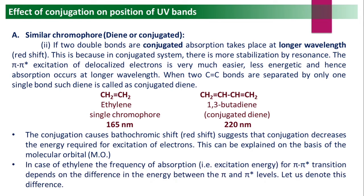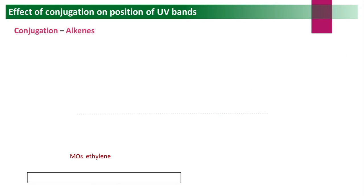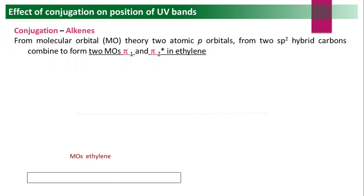In ethylene, the excitation energy for π→π* transitions depends on the energy difference (ΔE) between the π and π* levels. For ethylene, this gap is large, giving lambda max of 165 nm. In 1,3-butadiene (conjugated system), the energy levels come closer together — energy decreases — so lambda max increases to 220 nm.